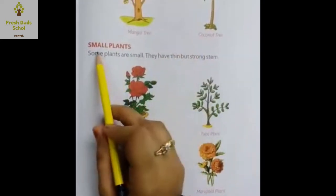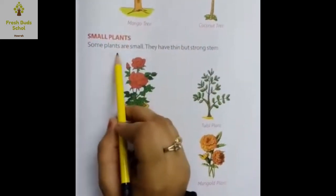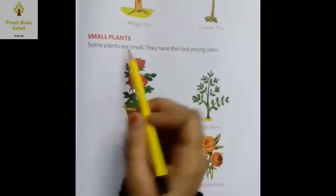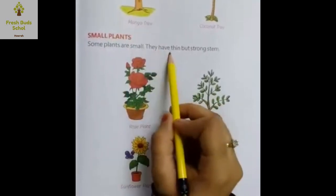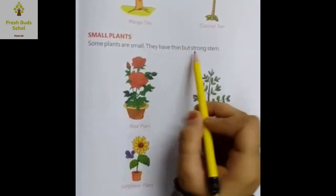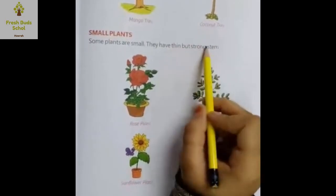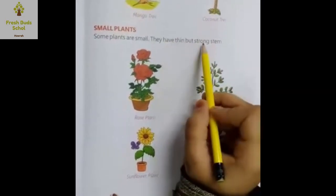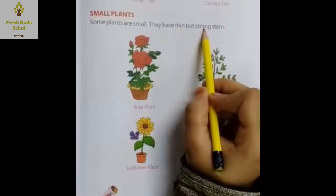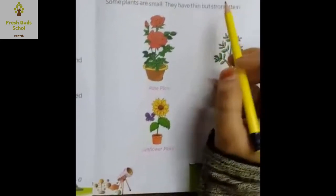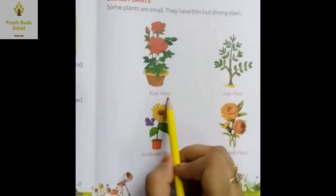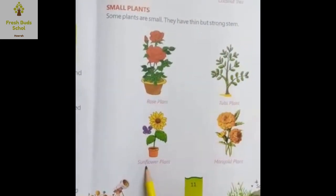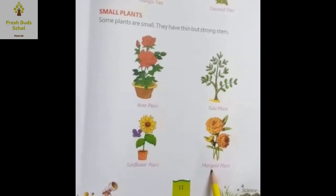Now small plants: some plants are small — kuch paudhe chhote hote hain. They have thin but strong stem. Inke jo tane hote hain, wo patle hote hain lekin strong matlab mazboot hote hain. Jaise rose plant, tulsi plant, sunflower plant, and marigold plant.